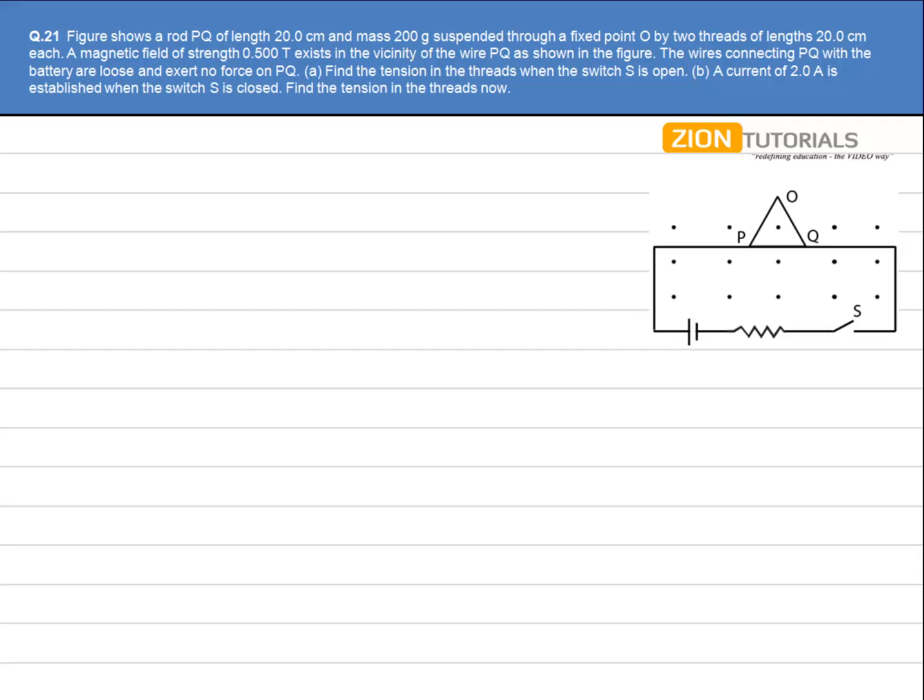The wire connecting PQ with the battery are loose and exert no force on PQ. Find the tension in the threads when the switch S is open, and secondly, a current of 2 amperes is established when the switch S is closed.